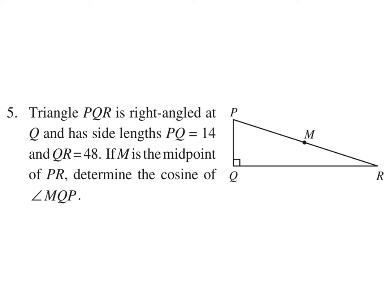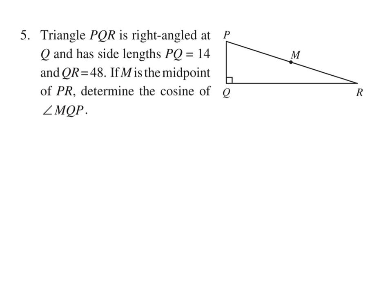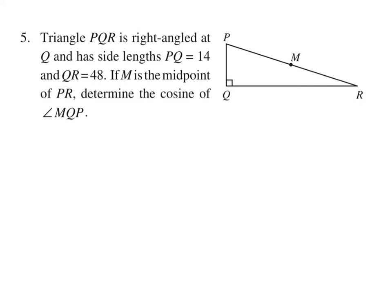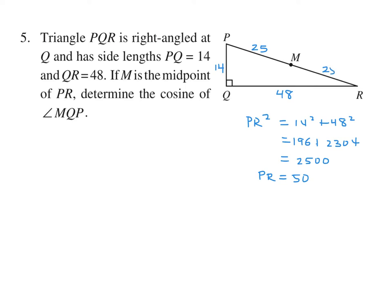Triangle PQR is a right angle triangle at Q, with side lengths PQ equal to 14 and QR equal to 48. If M is the midpoint of PR, determine the cosine of angle MQP. Let's label this: PQ is 14 and QR is 48. With Pythagoras, PR squared is 14 squared plus 48 squared, which is 196 plus 2304, equaling 2500. So PR is 50. Since M is the midpoint, PM equals 25 and MR equals 25.